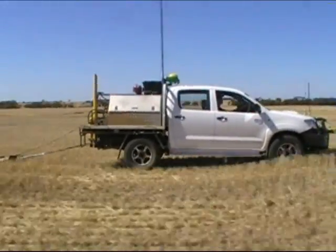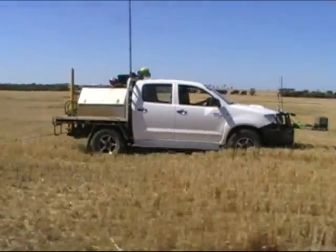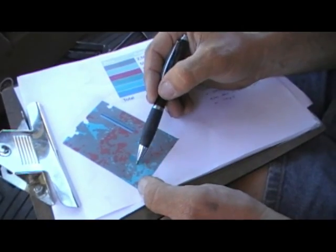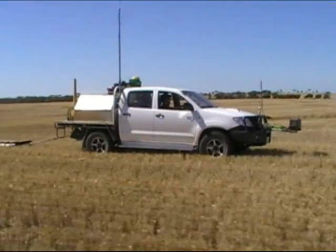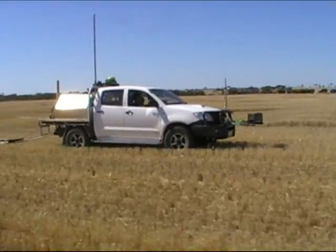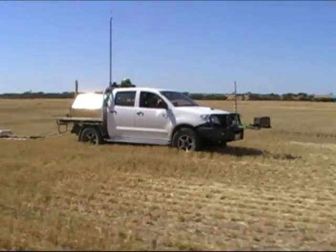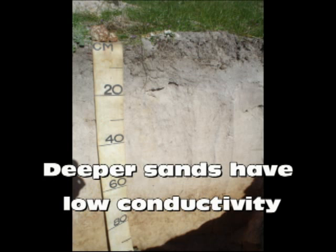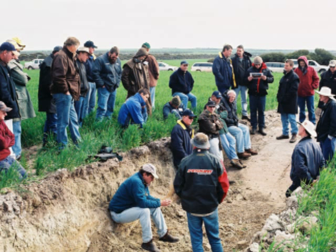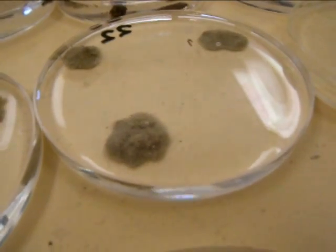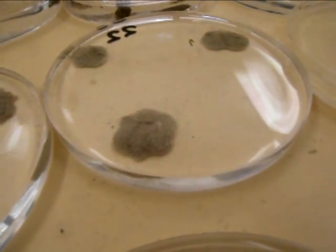As a consequence, it is the Mallee soils which have been most widely EM'd for variable rate gypsum applications. With EM paddock surveys, it's possible to pick up areas which have high conductivity and also low conductivity. Generally the low conductivity areas are deeper sands, whereas the high conductivity areas tend to be shallow sands over clays. All the subsoil clays along the south coast are sodic and potentially gypsum responsive.